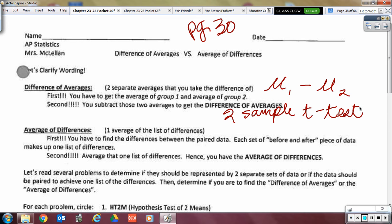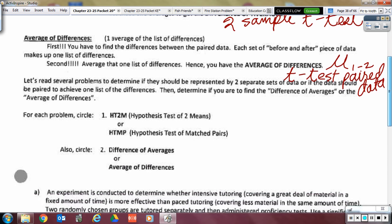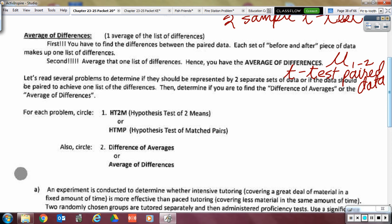Okay? Whereas, that average of differences, you're doing the mu of that set of differences, 1 minus 2. And we are doing a t-test, and it's because it is a t-test for paired data. All right. So, we want to practice that.